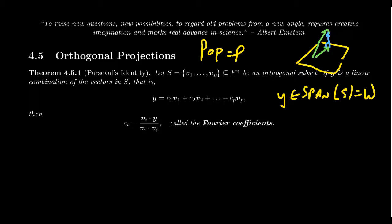And so why does this work? So the idea is let's take this linear combination right here. If we take Y is equal to C1 V1 plus C2 V2 all the way down to CP VP.